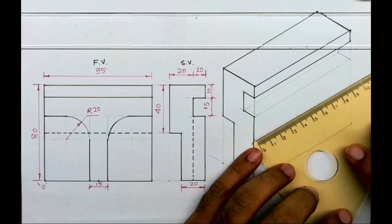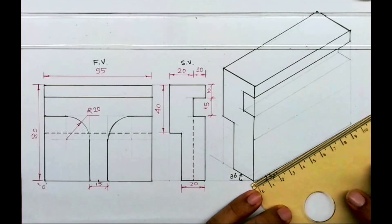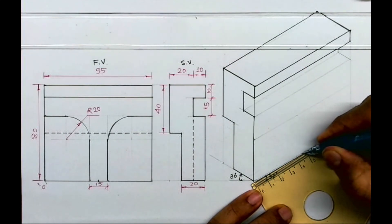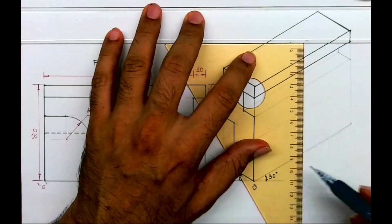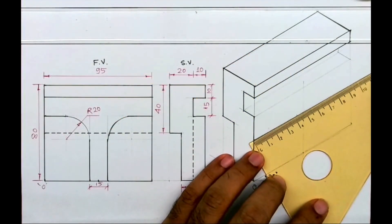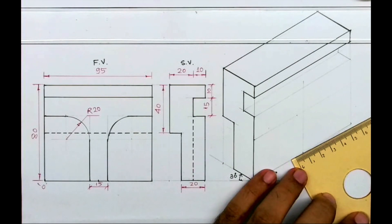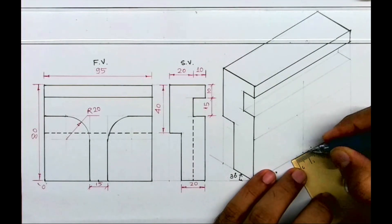This total length is 95. I'll take midpoint which is 47.5, and then I will take 15. So 7.5, 7.5 on both the sides.